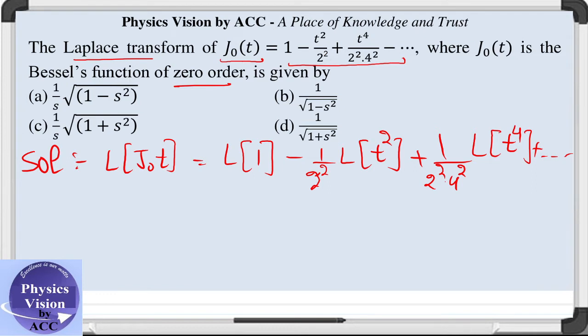Now, since we know that Laplace of t raised to the power n is n factorial divided by s raised to the power n plus 1, we will make use of this property. This will become 1 by s minus 1 by 2 square, the numerator will be 2 factorial which is 2 divided by denominator s raised to the power 3.